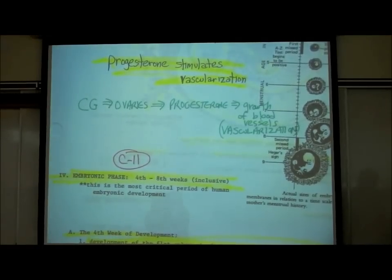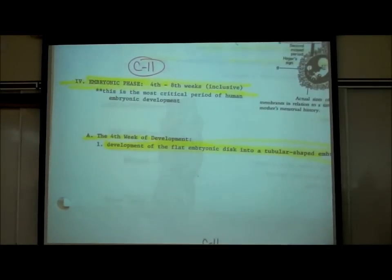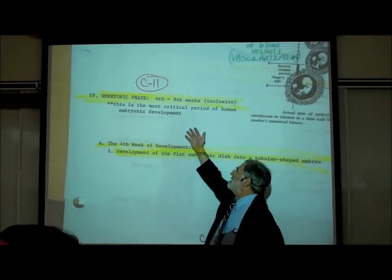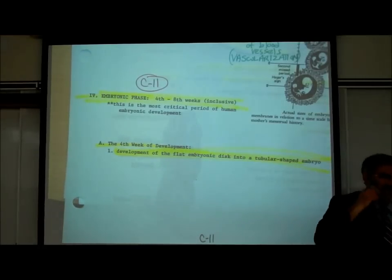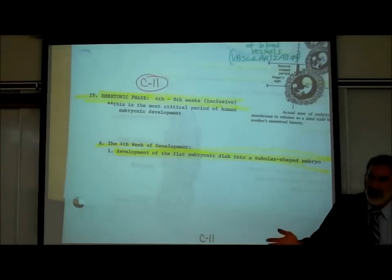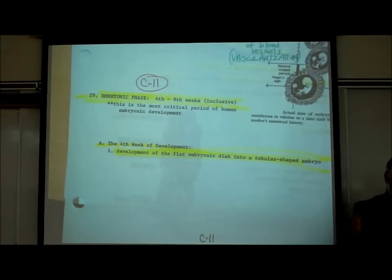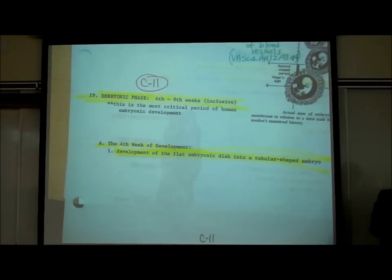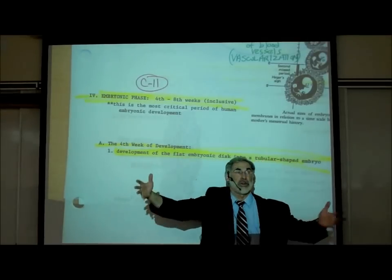So that's the third week. The embryonic phase is the fourth through eighth weeks — this is the most critical time. If anything goes wrong during the first three weeks, there's a spontaneous abortion and the baby stops developing. But if something goes wrong in the fourth through eighth weeks, the baby will continue to develop but be born with serious deformities, because this is when all the organs are really forming.